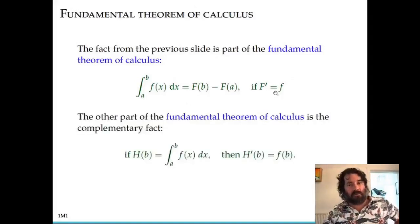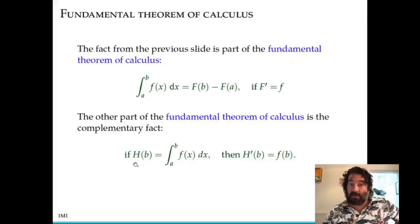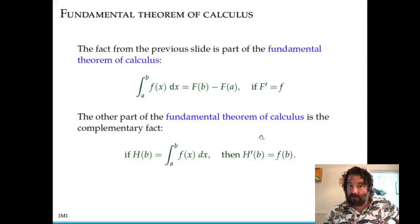The other part of the fundamental theorem of calculus is complementary to the first part. It says that if you define a function given by a definite integral, where we think of a, the lower limit, as fixed and b as the variable, and take the function which gives the area between the x-axis and the graph of f between a and b as we vary b — if you take the derivative of this function h with respect to b, you get f of b. This is complementary to the first part.